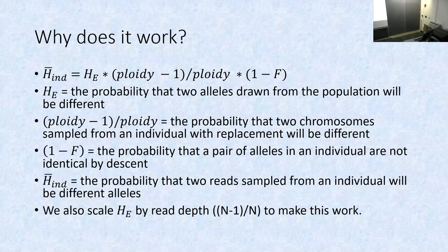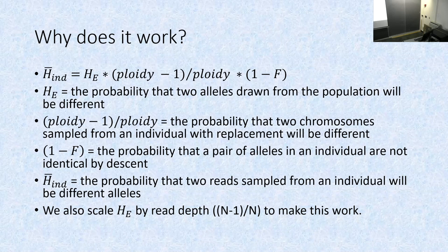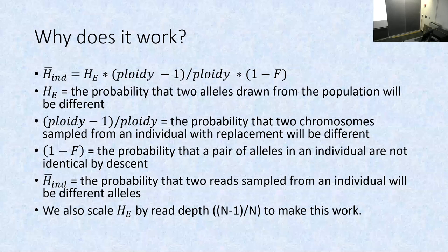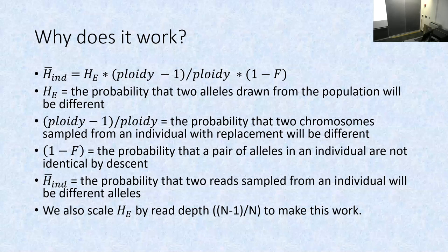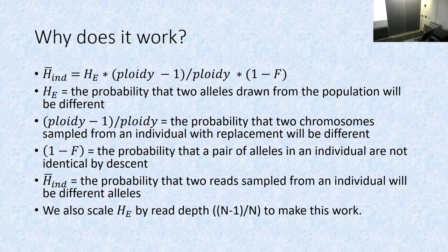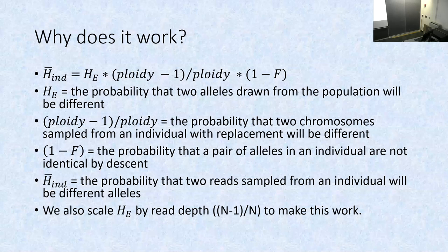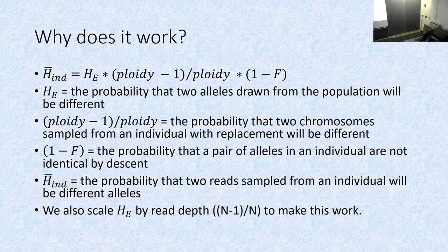HE is the probability that in the whole population, two sampled alleles will be different from each other. The factor (ploidy − 1) / ploidy is the probability that within one individual, sampling two chromosomes with replacement gives different chromosomes — one half in a diploid, three quarters in a tetraploid. One minus F is the probability that a pair of alleles in an individual are not identical by descent. Multiplied together, you get the probability that two sequencing reads sampled from that individual carry different alleles. There's also a correction for read depth sample size.